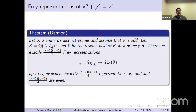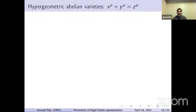This is the classification that one has. This might seem like a lot of information, but now let's see how to obtain these representations — at least most of them — from hypergeometric abelian varieties.